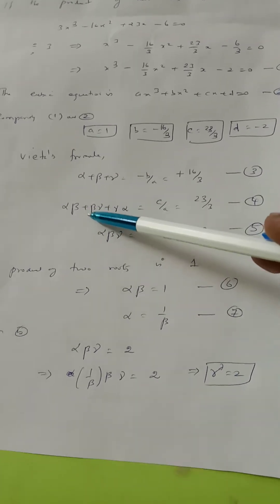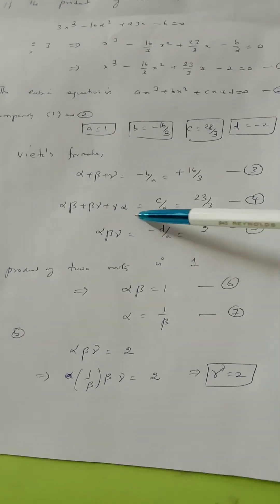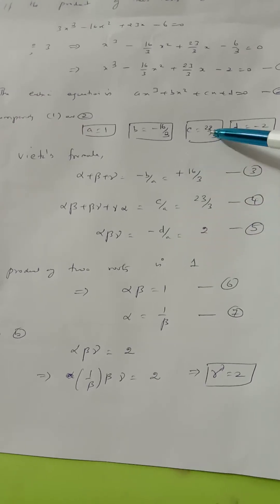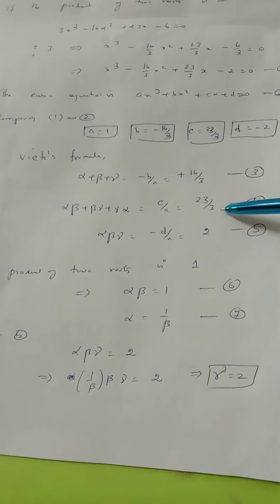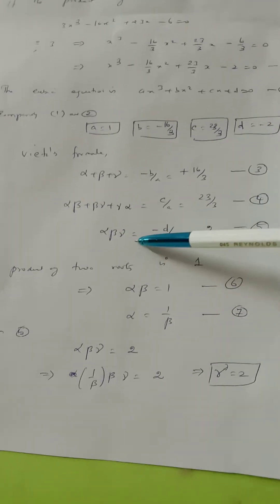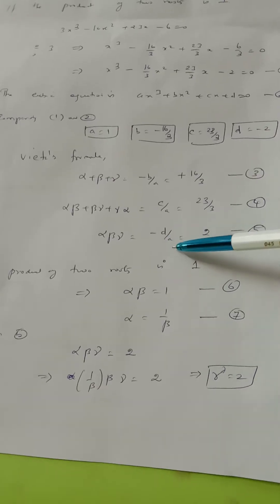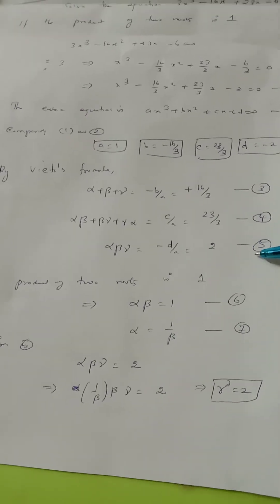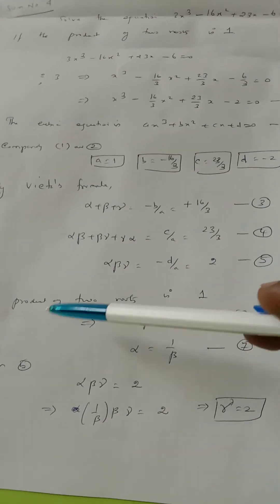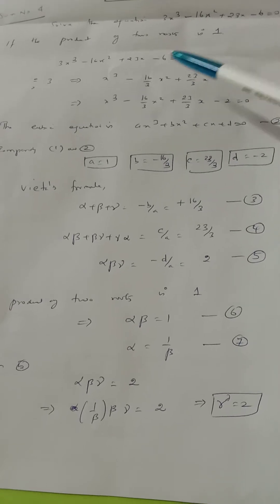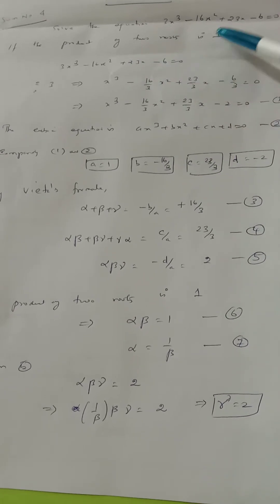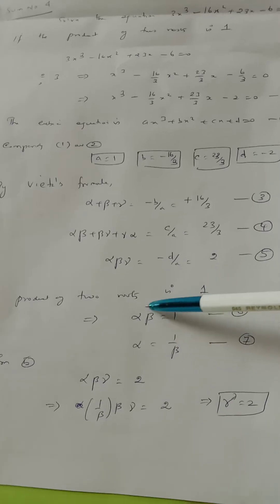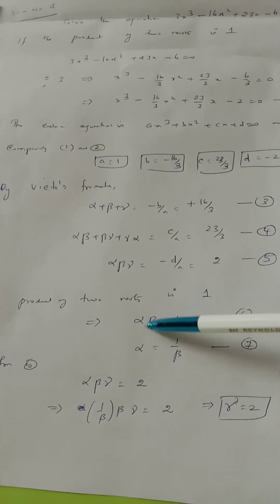The second Vieta's formula: alpha·beta plus beta·gamma plus gamma·alpha equals C by A. The third Vieta's formula: alpha·beta·gamma equals minus D by A, which gives plus 2. This is equation number 5. Now applying the condition: the product of the two roots is 1, so alpha·beta equals 1, meaning alpha equals 1 by beta. This is equation number 7.